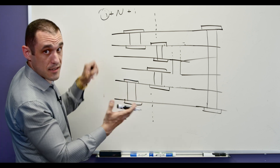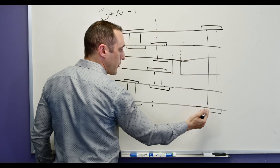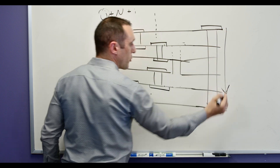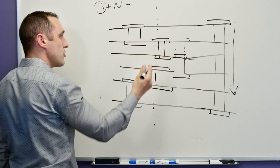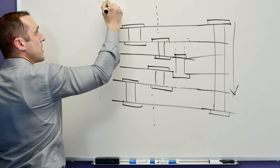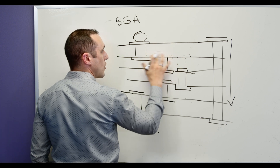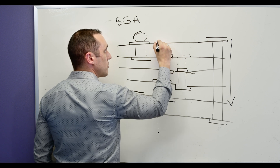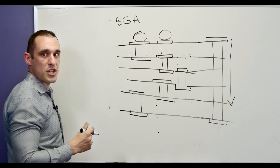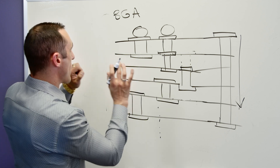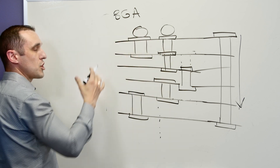Of course we can extend this further — instead of just a blind via going to L2, we can also have a buried via going to L3, and we can mirror this arrangement on the bottom as well. Just because you use blind and buried vias on the top layer doesn't mean you have to use them on the bottom layer too — it's typical but not required. These vias are typically used to escape from a fine pitch BGA, allowing you to stack microvias over two layers and then route underneath the BGA balls when the pitch gets very small.